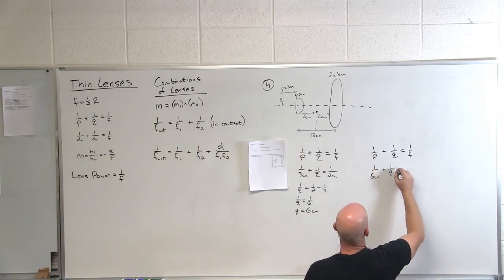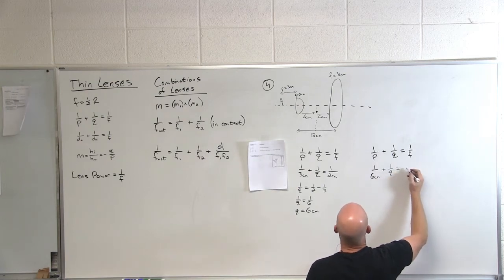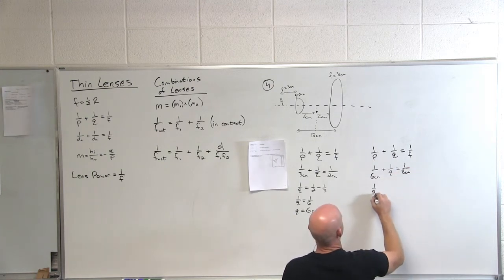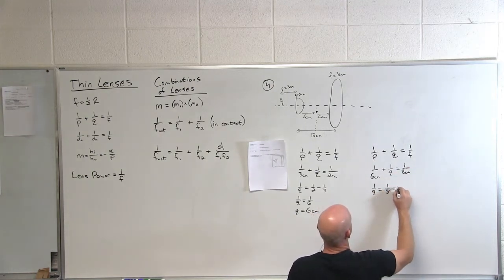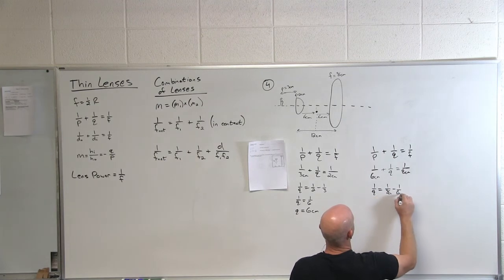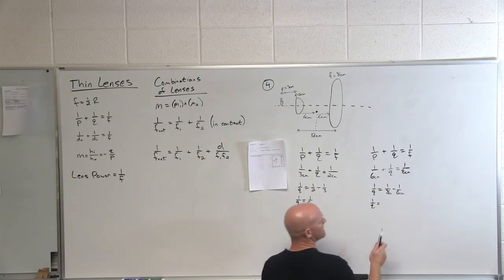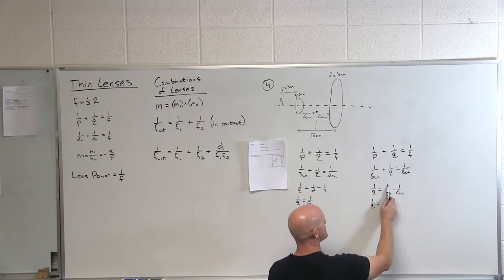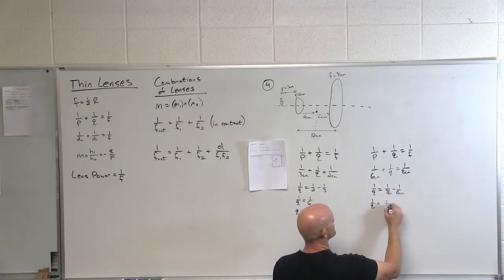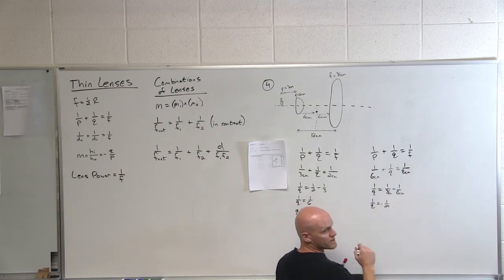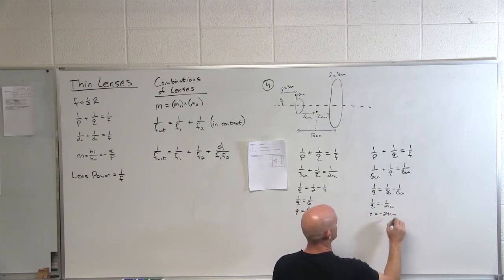What's the focal distance for this new lens, the second lens? Good. So we'll get one over Q equals one over eight minus one over six. What's my common denominator? 24. One over eight is the same as three over 24. One over six the same as four over 24. And what's three over 24 minus four over 24? So not just one over 24, but negative one over 24. And so Q we find out equals negative 24 centimeters.